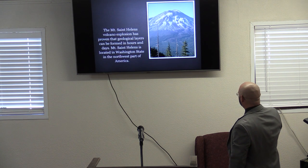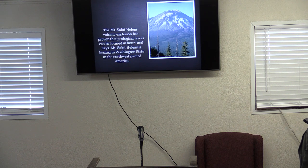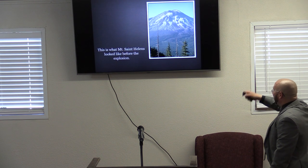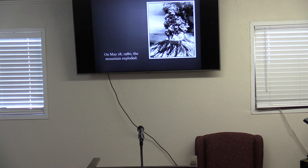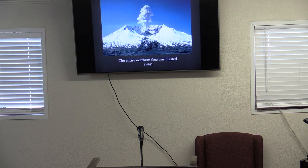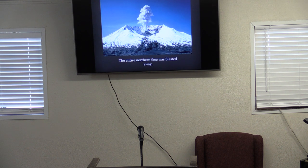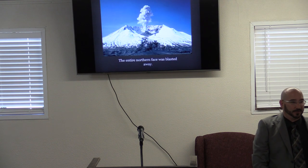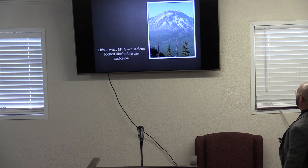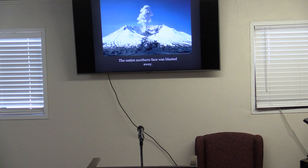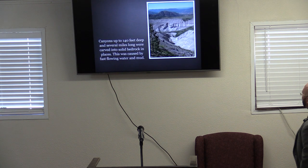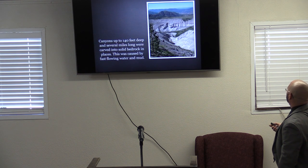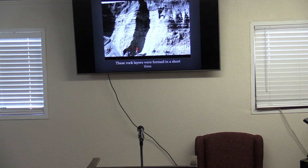Number seven: the uniformitarian view was disproven by Mount St. Helens. The Mount St. Helens volcano explosion proved that geological layers can be formed in hours and days. Located in Washington State, on May 18th, 1980 the mountain exploded — the entire northern face was blasted away. Reports said ash was falling as far as New Mexico. Canyons up to 140 feet deep and several miles long were carved into solid bedrock by fast-flowing water and mud. These rock layers were formed in a short time.